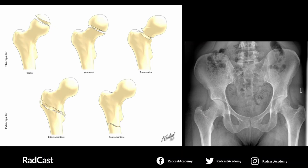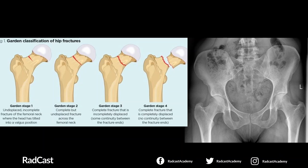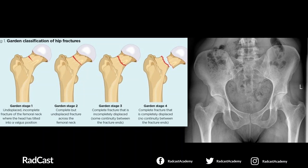We can also classify hip fractures based on how severe the fracture is — for this we use the Garden classification. Stage one is an incomplete fracture. Stage two is complete, running the whole length of the bone, but undisplaced. Stage three is a complete fracture with some displacement but where some connection between the two pieces of bone remains. Stage four, the most severe, is where there is complete displacement with no areas of continuity between the two pieces.